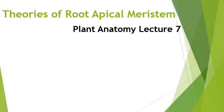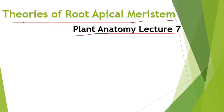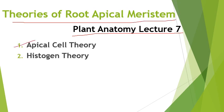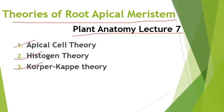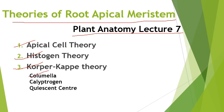Hello everyone, welcome back to another video from Peng Lampok Tutorial. This is the 7th lecture series of Plant Anatomy. Here I'll talk about theories of root apical meristem, which include apical cell theory, histogen theory, and corpus-calyptra theory. Also, the definitions of columella, calyptrogen, and quiescent center will be discussed in this video.